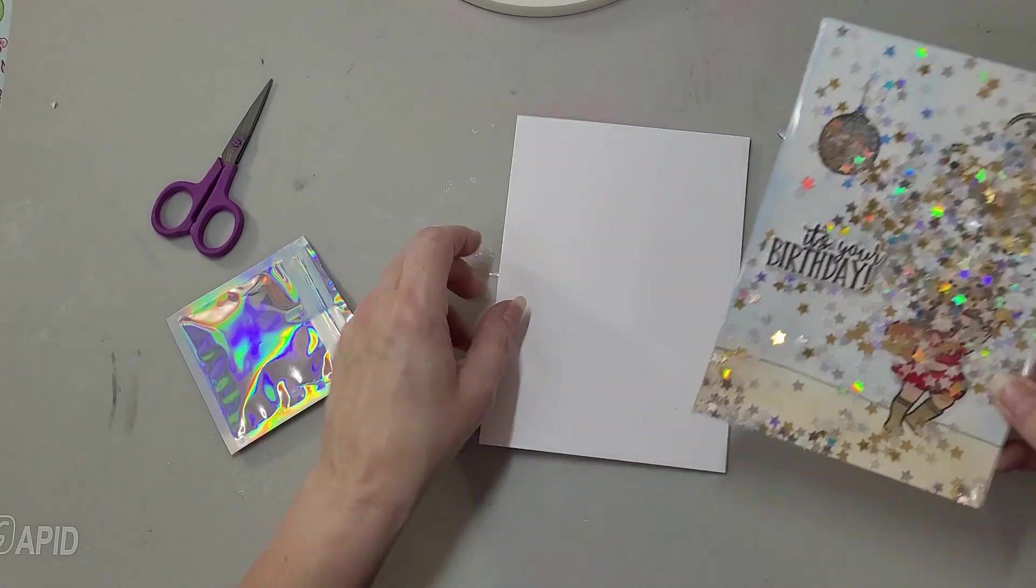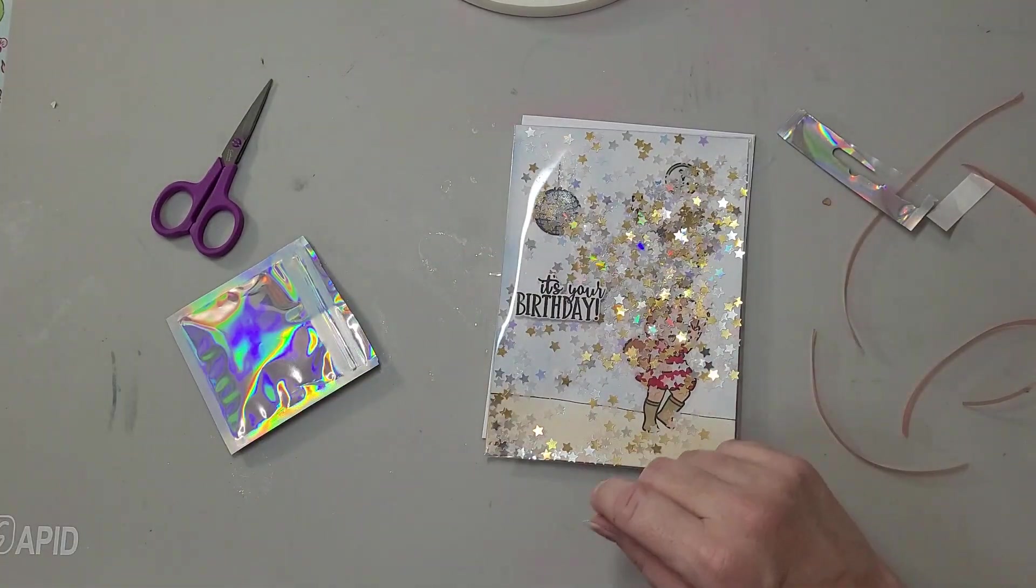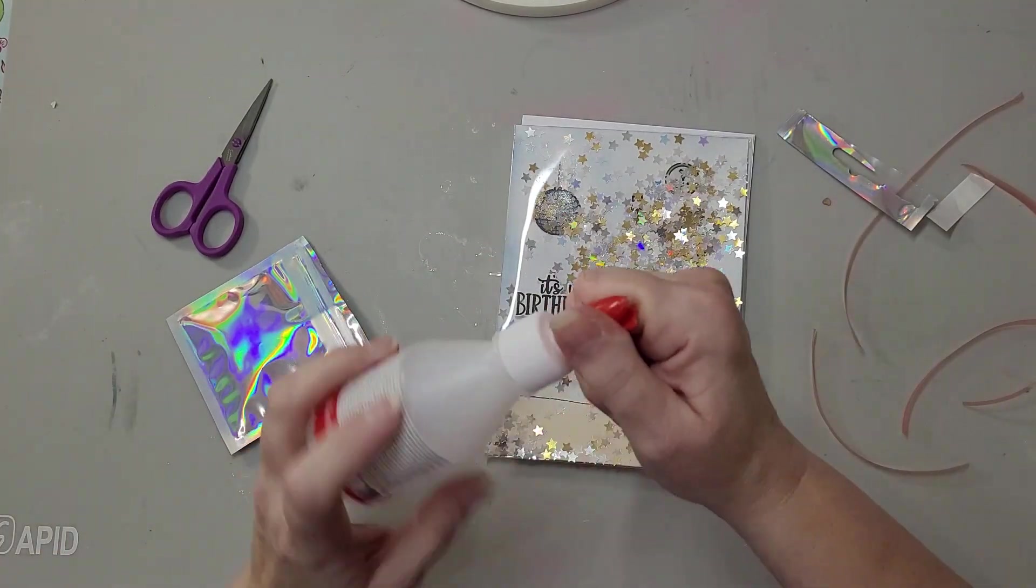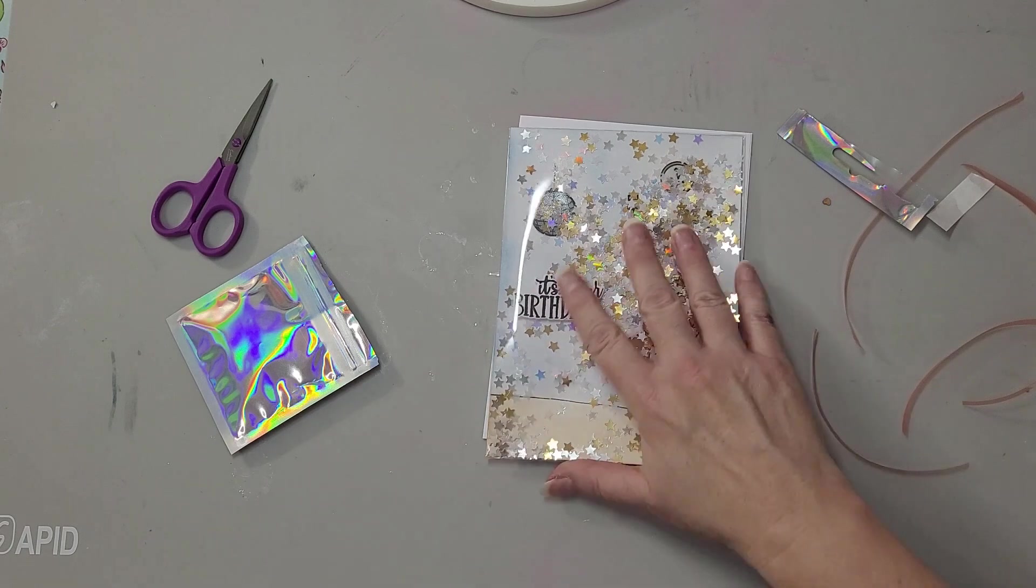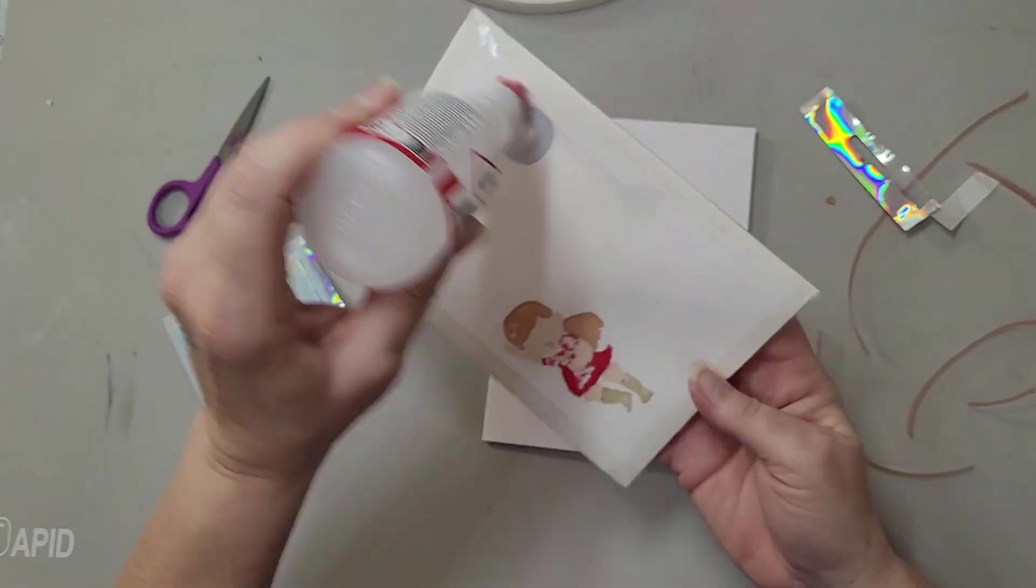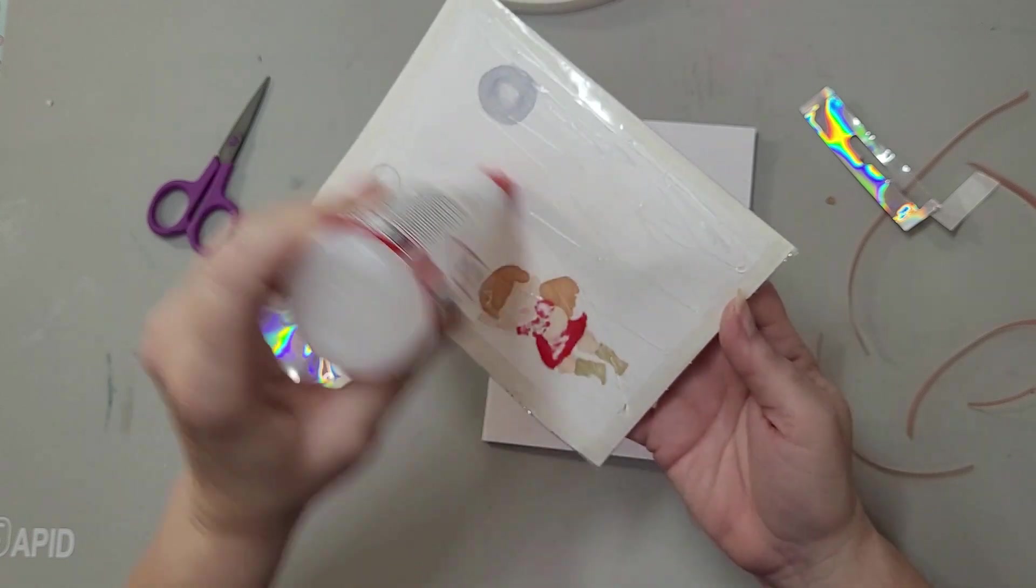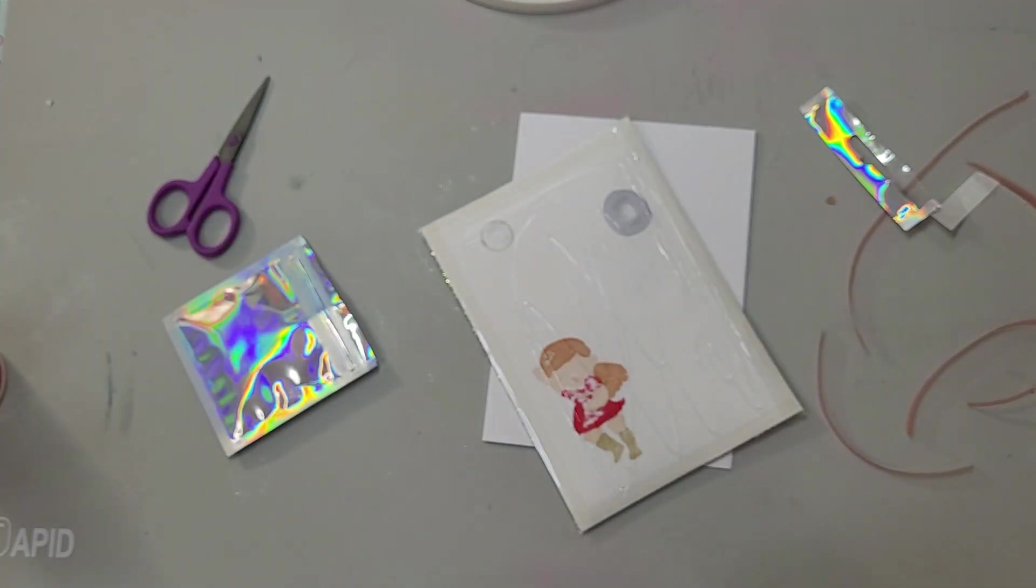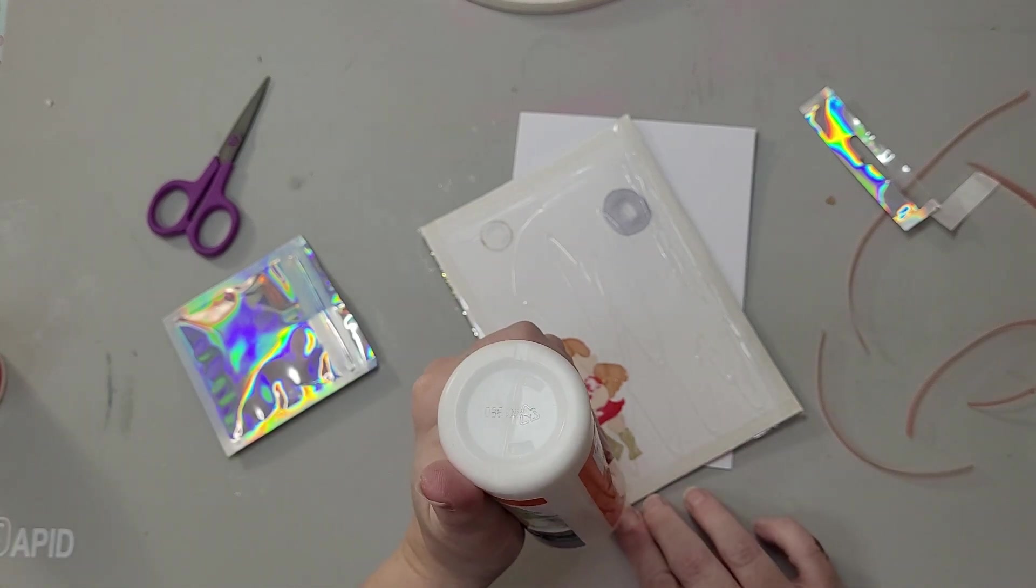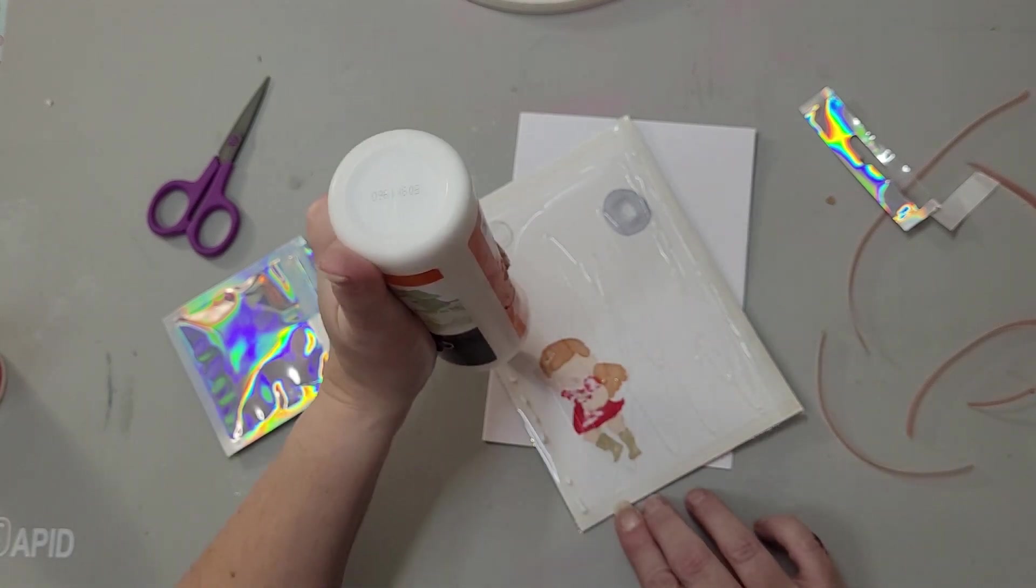Alright, so now with this on here to hold it up, your shaker bits will be free. So now all we have to do is attach it to the front of the card, so we'll just take your favorite glue.